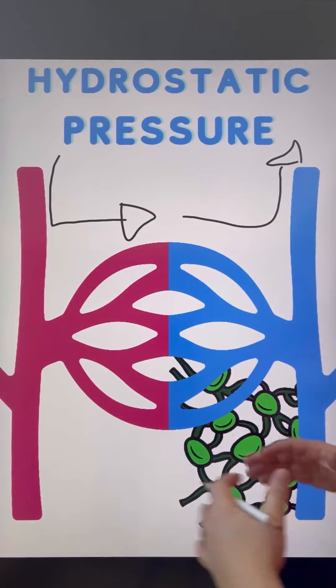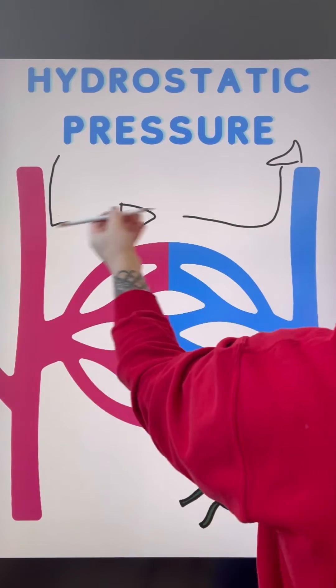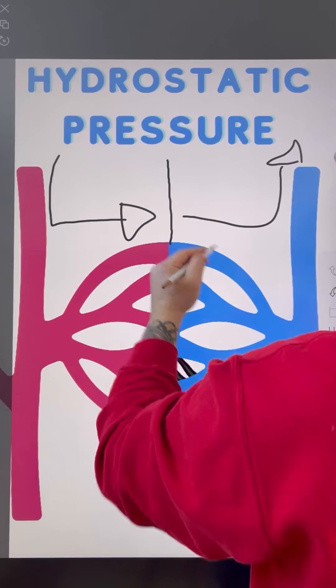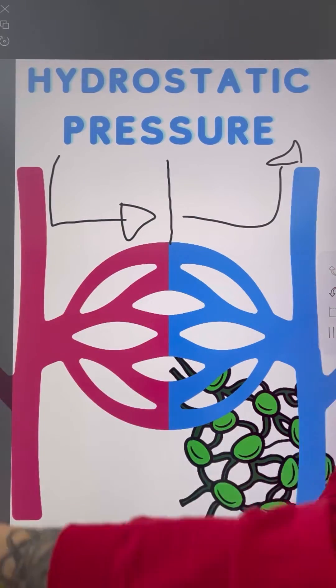It's slower moving. So essentially what happens is that we have a large force moving this way and a slower force moving that way, effectively creating what we call a pressure gradient here at the capillary level.